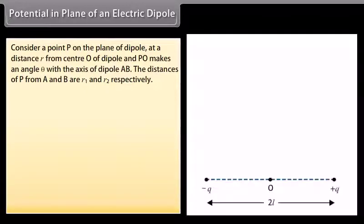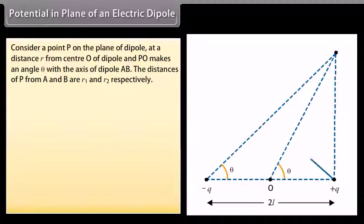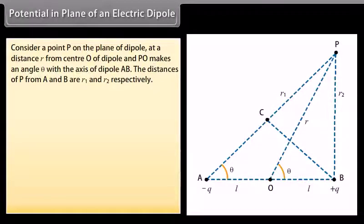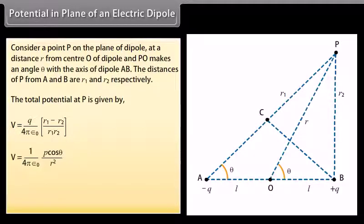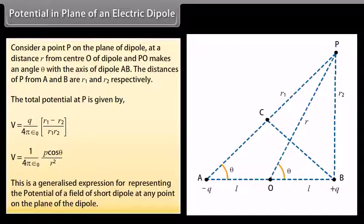Potential in the plane of an electric dipole. Consider a point P on the plane of the dipole at distance R from center O, where PO makes an angle θ with the axis AB of the dipole. The distances of P from the two charges are R₁ and R₂ respectively. The total potential at P is V = (Q/4πε₀) × (R₁−R₂)/(R₁R₂) = (1/4πε₀) × (P cosθ)/R². This is the generalized expression for the potential of a short dipole at any point in its plane.